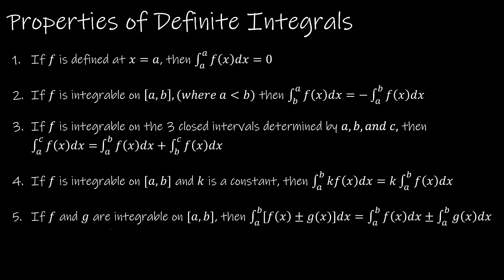You have five properties to go over. The first says if f is defined at x equals a, then the integral from a to a of f of x dx is 0 — if you're finding the area of nothing, you get 0. For property 2, if f is integrable on a to b where a is less than b, then if you need to find the integral from b to a — with the limits in the wrong order — you change it to a negative value and switch the limits back to least to greatest.